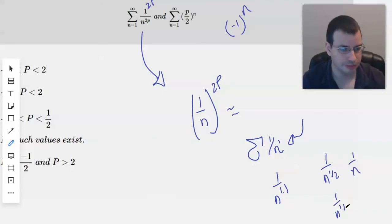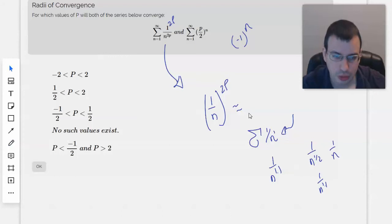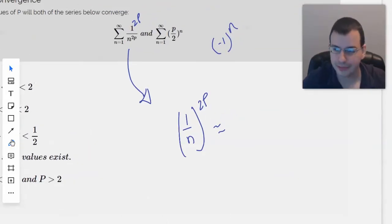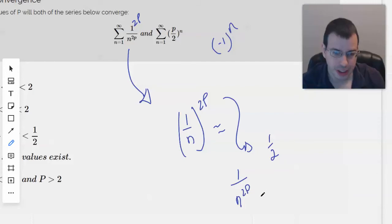And so we want to choose P so that it has to be larger than 1 half. So 1 over N to the 2P, P is greater than 1 half. It can't be 1 half, but it can be larger than 1 half.